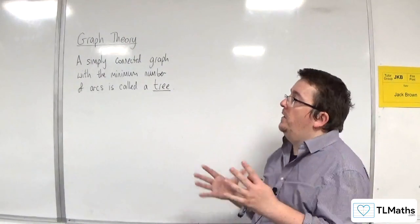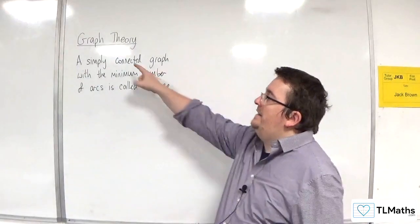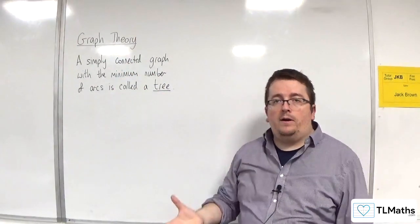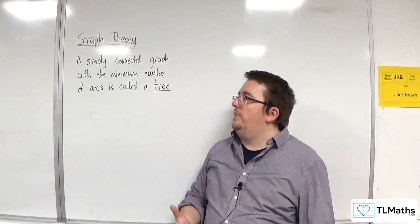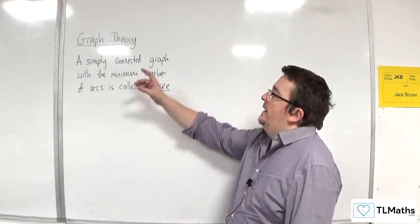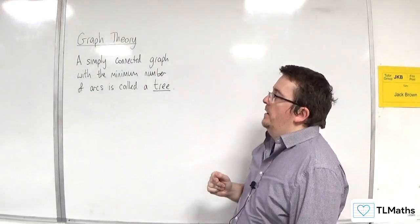So we can't have multiple edges, we can't have any loops. It is connected, so there is a path from every vertex to every other vertex in the graph. And it needs to have the minimum number of arcs.